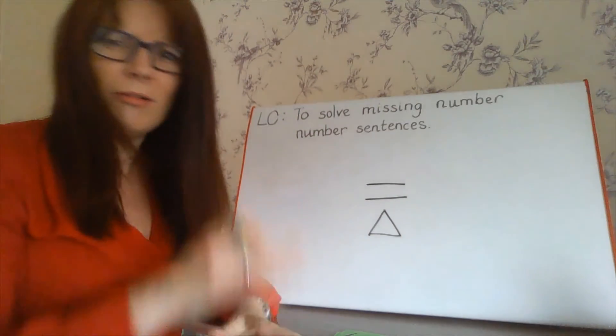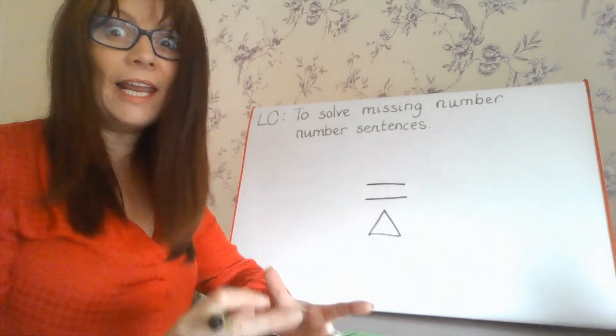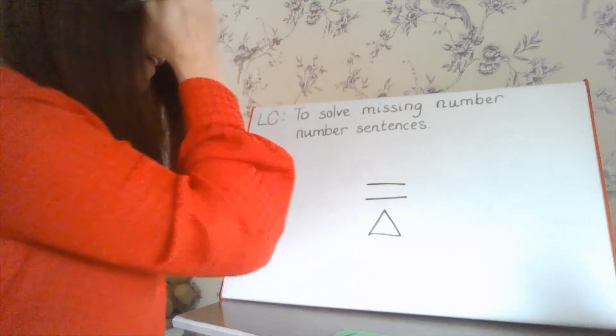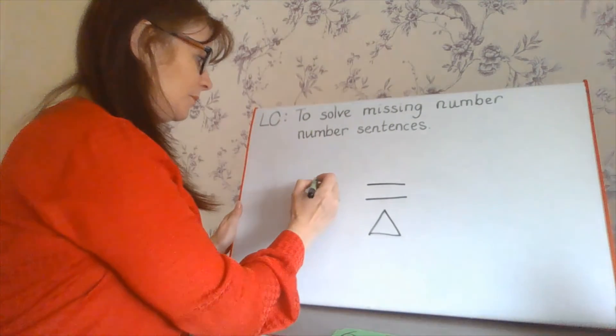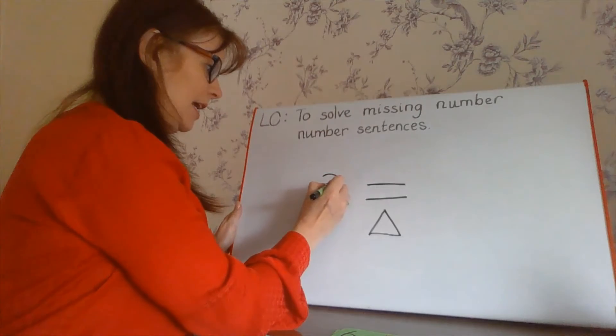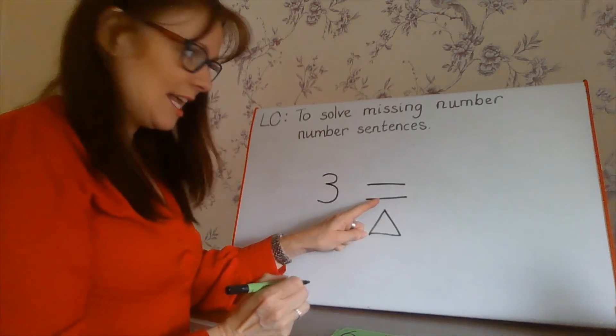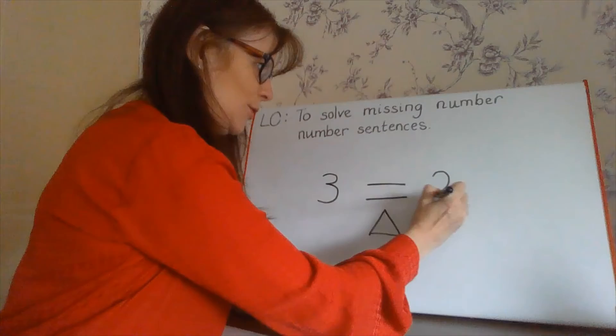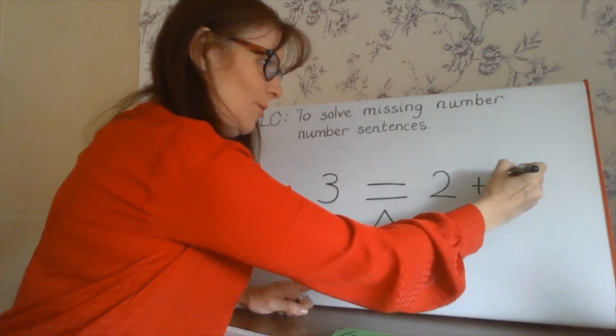So your number sentences can be all sorts of different things. It can even look backwards like three equals or is the same as two, two, add one.